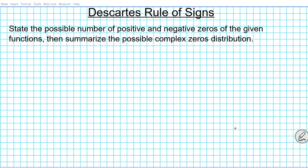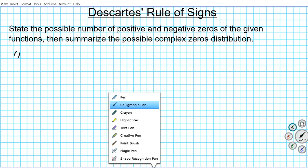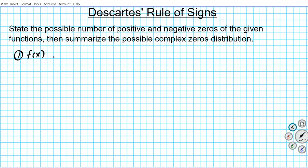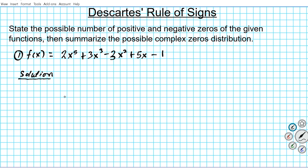The instructions for our examples are to state the possible number of positive and negative zeros of the given functions, and then summarize the possible complex zeros distribution using a chart. For problem number one, the given polynomial is f(x) = 2x⁵ + 3x³ − 3x² + 5x − 1. This is the quintic polynomial presented at the opening of this presentation.